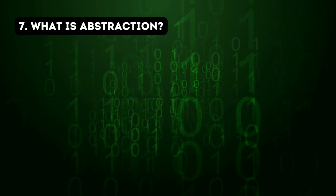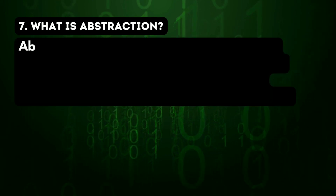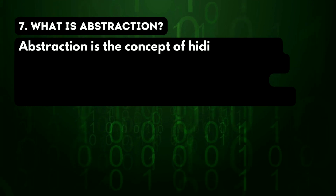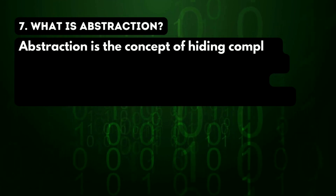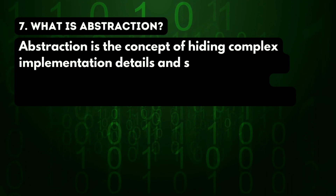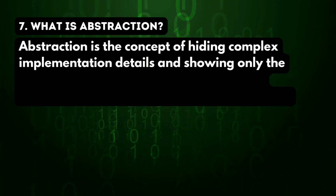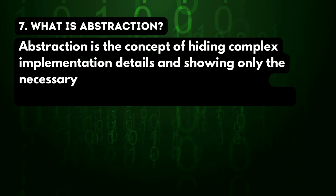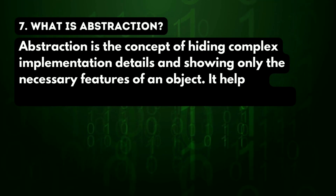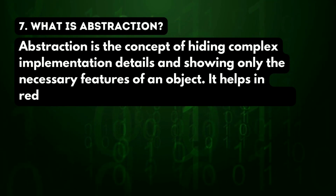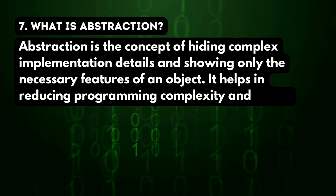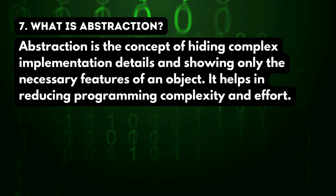Seventh question: what is abstraction? Abstraction is the concept of hiding complex implementation details and showing only the necessary features of an object. It helps in reducing programming complexity and effort.